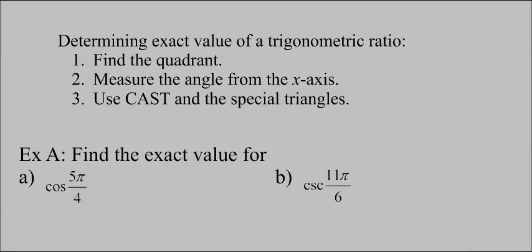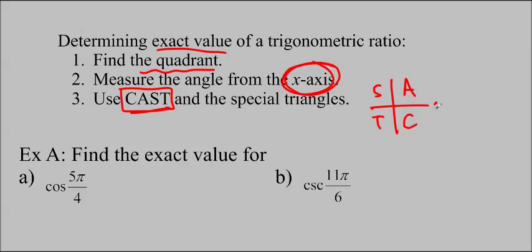We're going to determine the exact value of a trigonometric ratio. The first thing we're going to do is find the quadrant. We're going to measure the angle from the x-axis, always off of the x-axis, and then we're going to use CAST. There is a video for the CAST rule if you want to look at that. I'll just draw CAST for you right here, and I'm also going to add 0, pi over 2, pi, and 3 pi over 2. Just a reminder that pi over 2 is like 0.5 pi, pi is 1 pi, and 3 pi over 2 is 1.5 pi. As you go around again, you get 2 pi, 2.5 pi, 3 pi, and so forth.